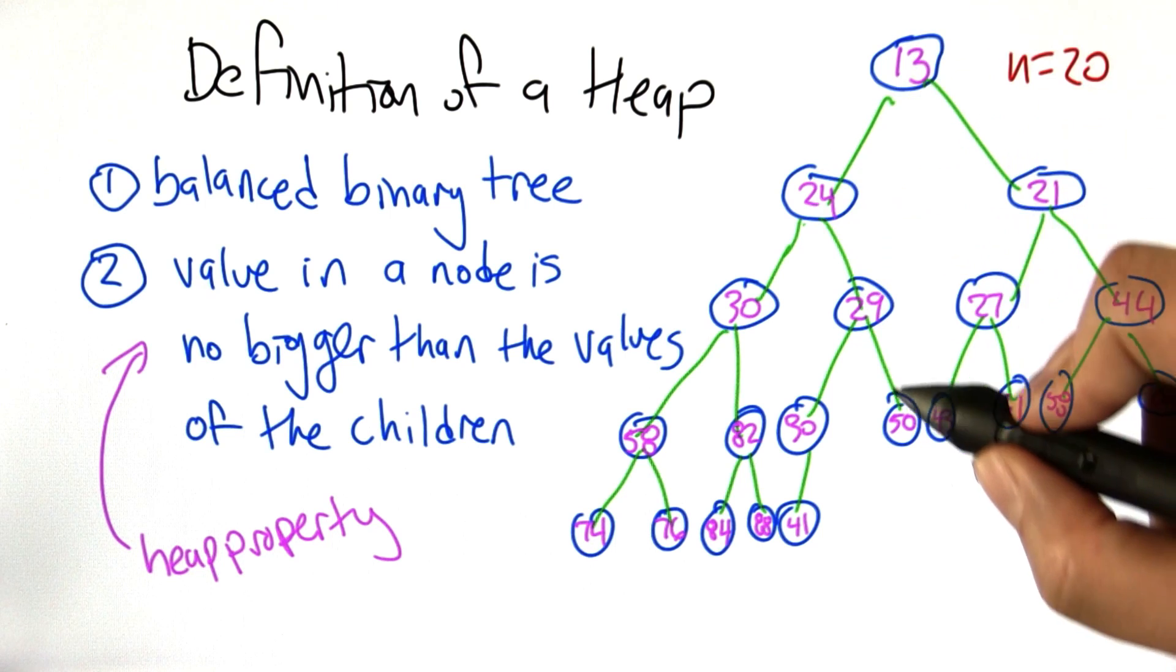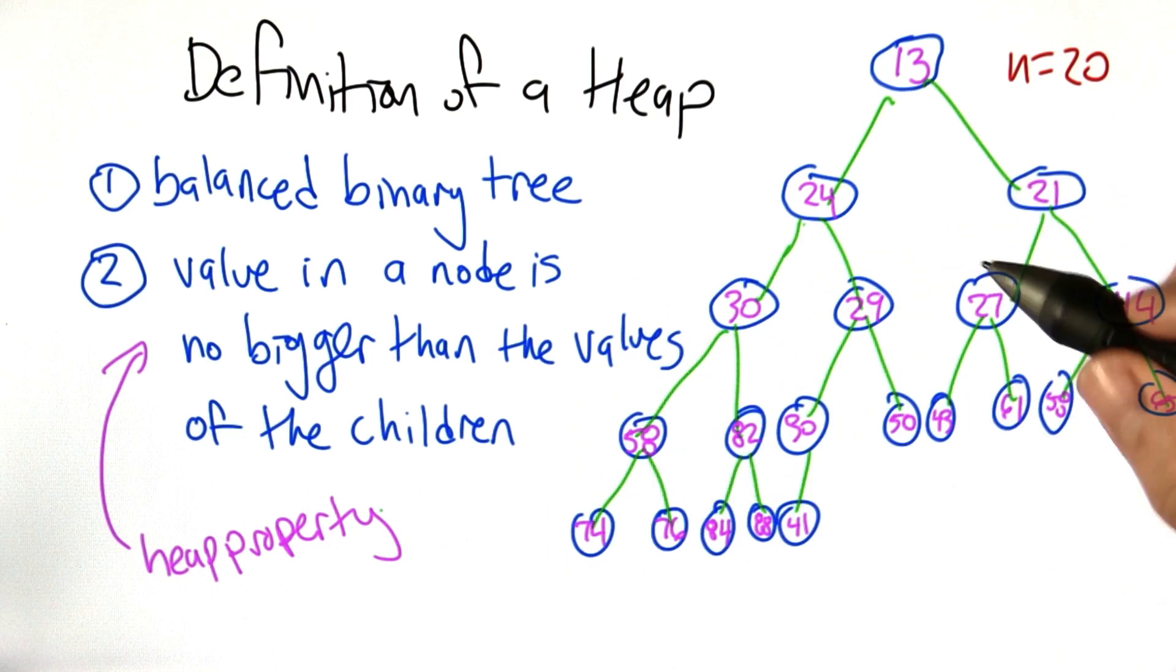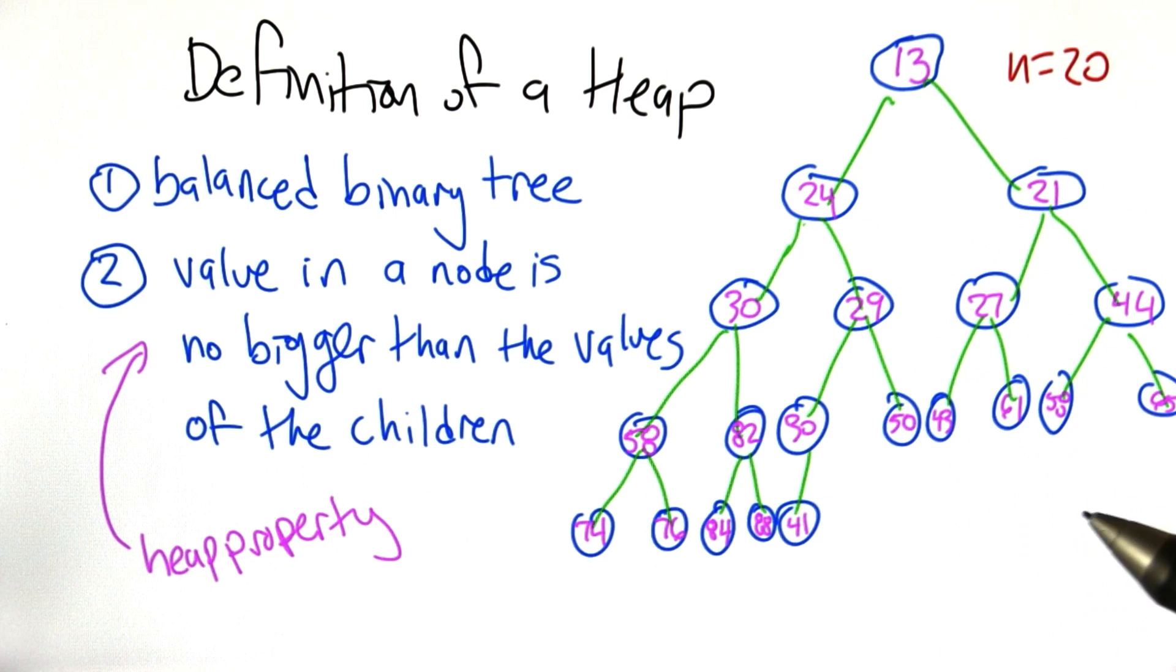And that's because as we're going down the tree, the parent value is never bigger than the value of the child. That's the heap property. So what that causes is that as we traverse down the tree, we're always traversing down a sorted list.